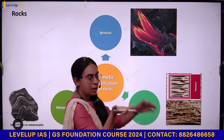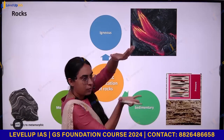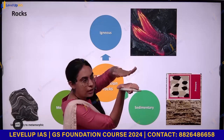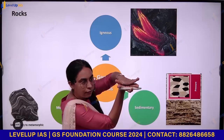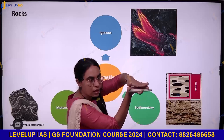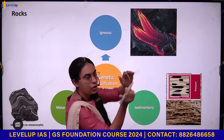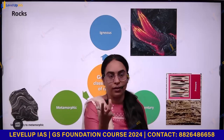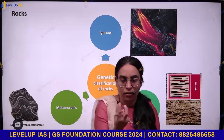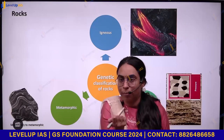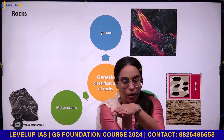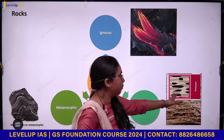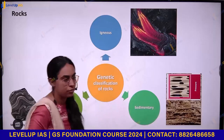Sediments coming together undergo compaction, solidification, and lithification — lithification being the formation of rocks — giving you sedimentary rocks. For example, sandstone: sand particles come together, compact, and form sandstone.